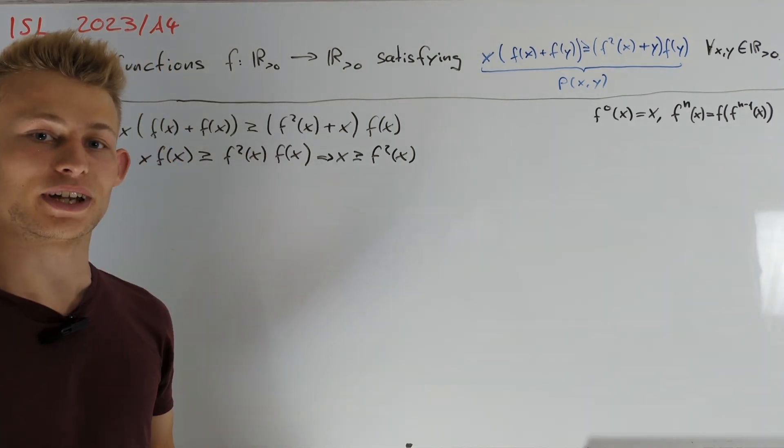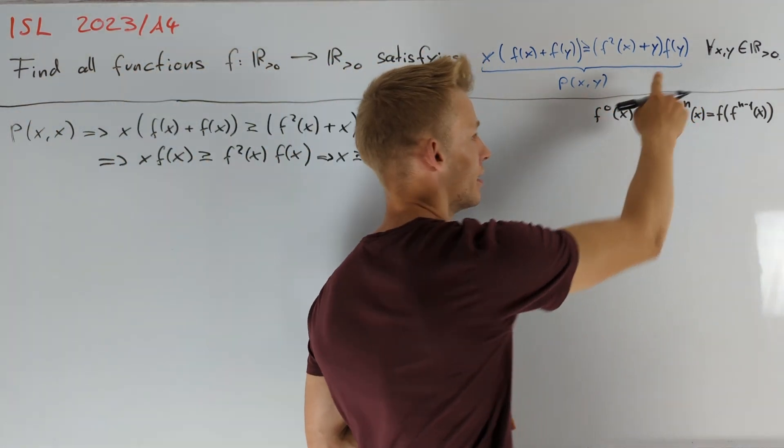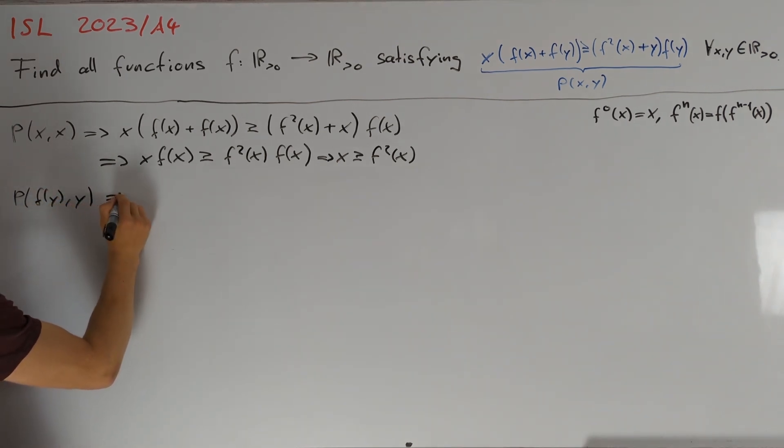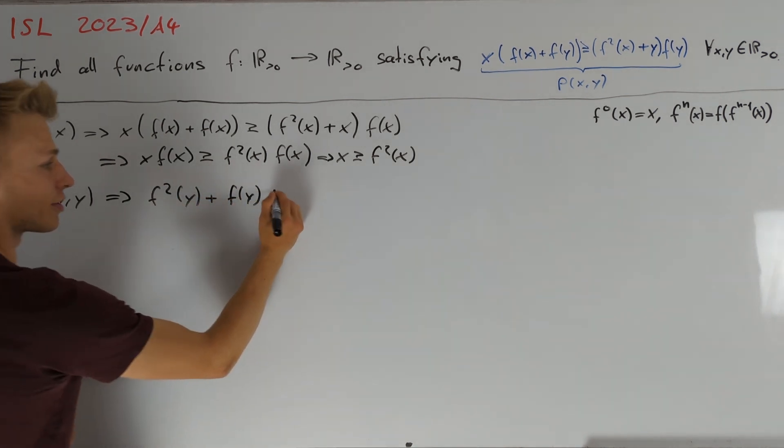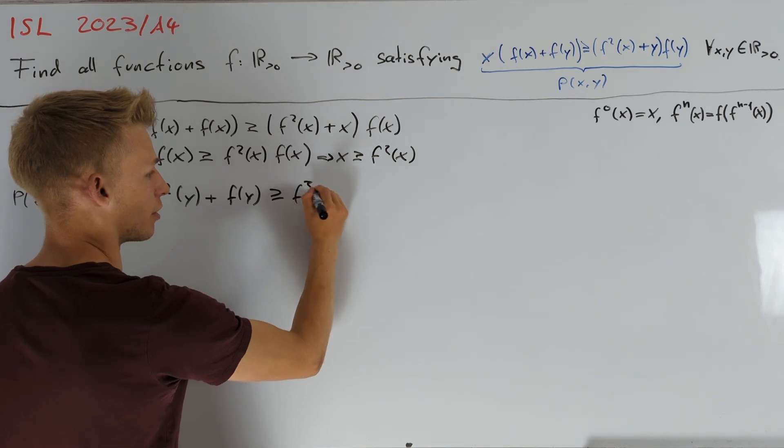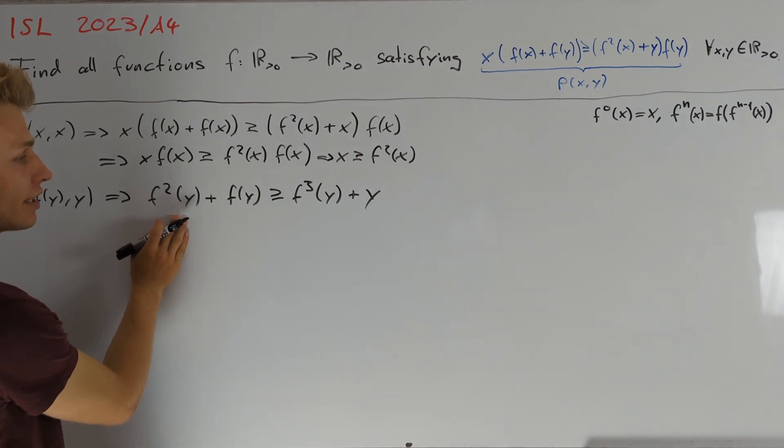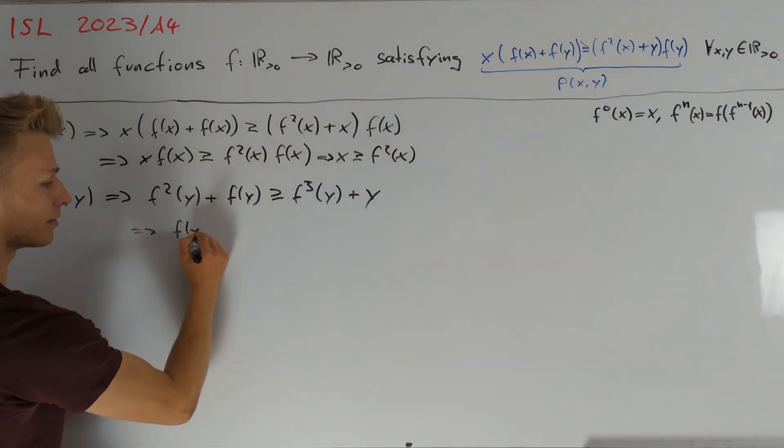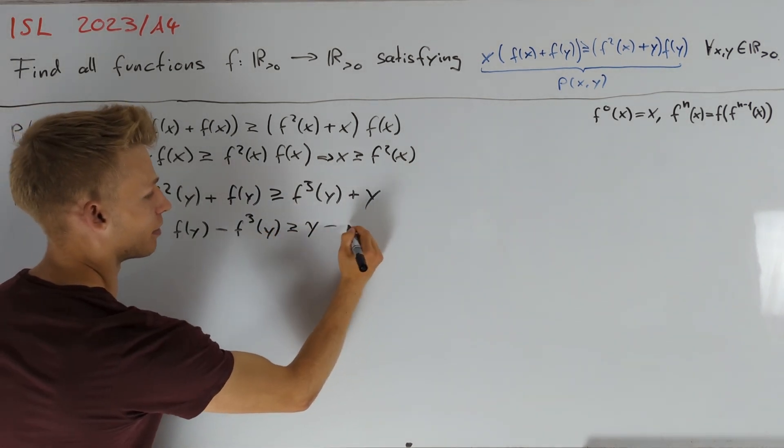Let's make further use of the fact that we are allowed to divide. This can be done by setting x equal to f(y). So, by taking a look at p(f(y),y), we get that f²(y) plus f(y) is greater than or equal to f³(y) plus y. Let's group y and f²(y) together and f(y) together with f³(y) because we already have this inequality.